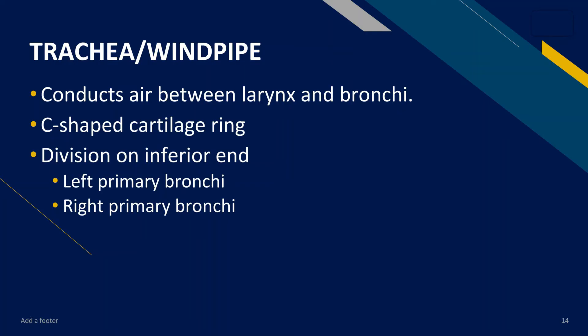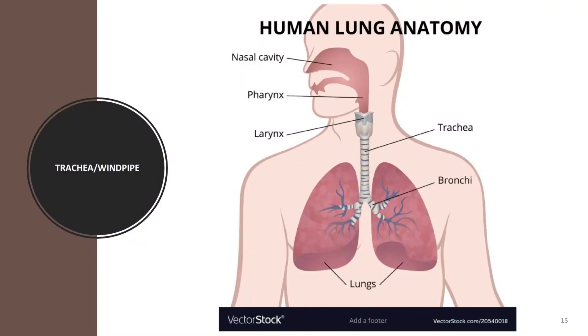The trachea is the passage that connects your throat and your lungs. The trachea, or windpipe, conducts air between your larynx and your bronchi. It has a C-shaped cartilage ring also visible in the microscopic view, and it has two divisions at its inferior end: the left primary bronchi and the right primary bronchi. As seen in the illustration, your trachea terminates into your right and left primary bronchi.